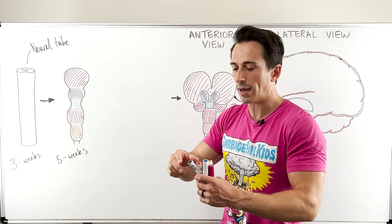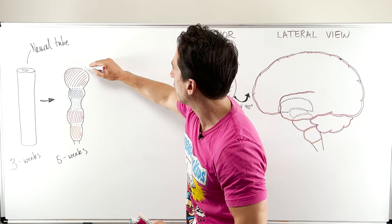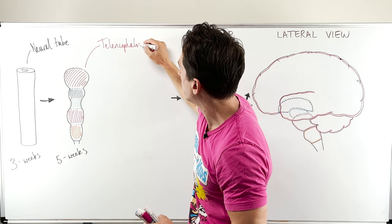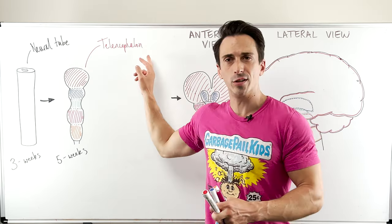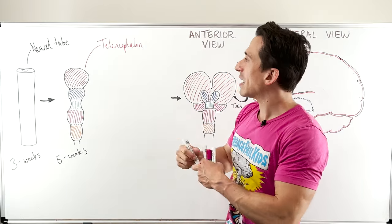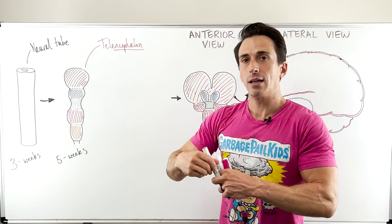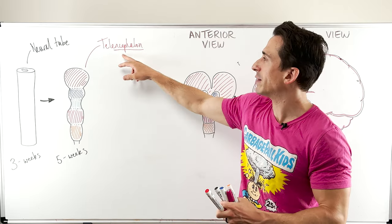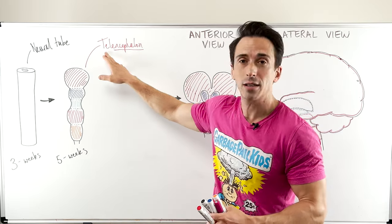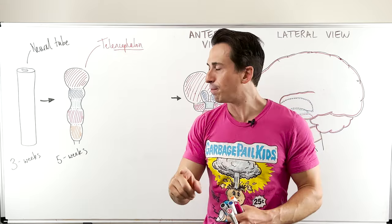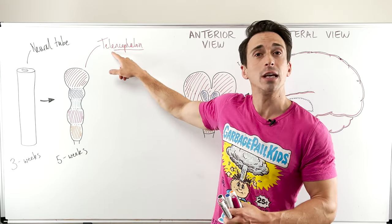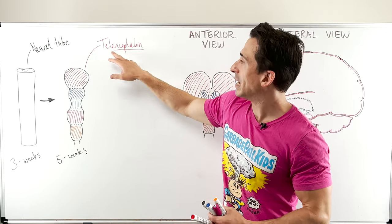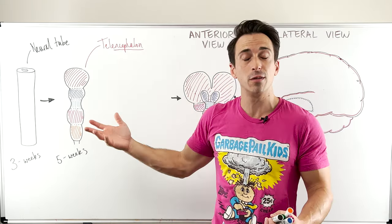Let's start at the top and move our way down. The very first vesicle you need to be aware of is the telencephalon. When we look at these words, they look a bit funny. Importantly, the suffix — the part at the end — is going to be 'encephalon' all the way through for all of these vesicles. Encephalon means brain. The prefix is the important part. Telencephalon — 'telos' in Greek actually means the end, the end point. So telencephalon means end of brain, which makes sense because it's the end of the developing neural tube.